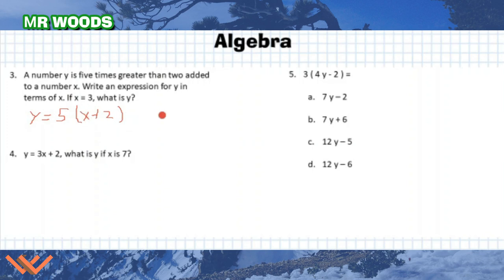Now all I need to do is just plug in that value for x. So y is equal to 5 times x, which is now 3, plus 2. And I just solve. So that is also equal to 5 times 3 plus 2, which is 5. And 5 times 5 is 25. So y is equal to 25. And that's my final answer here.